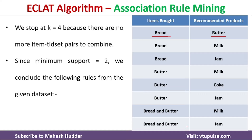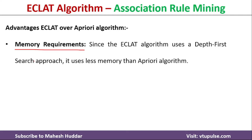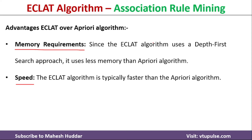Now let's look at the advantages of the Eclat algorithm over the Apriori algorithm. First, memory requirement: since Eclat works in a vertical direction using a depth-first search approach, it uses less memory than Apriori. Second, speed: Eclat is typically faster than Apriori, again due to the vertical approach. Third, number of computations: because of the vertical approach, Eclat performs less computation compared with Apriori.